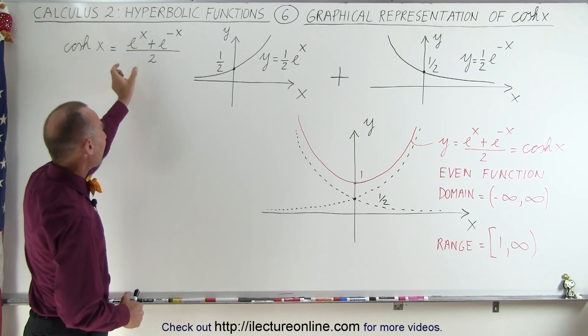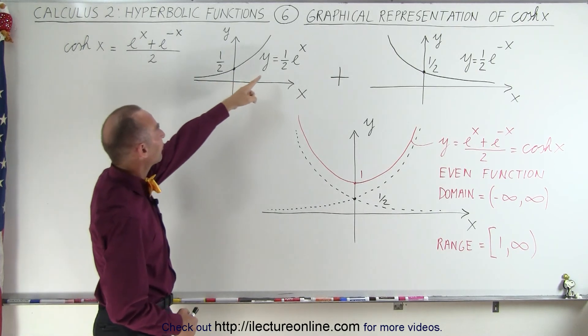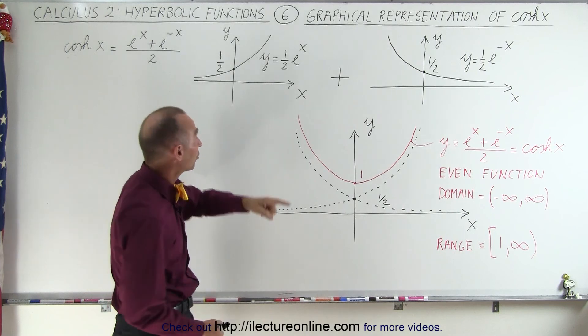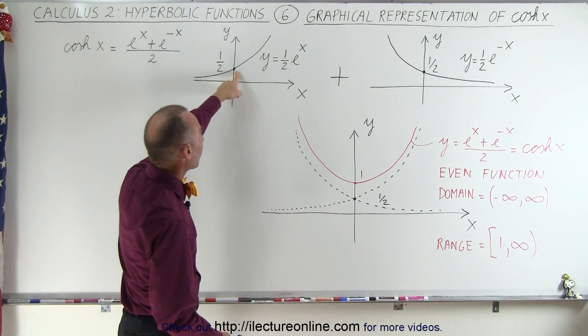If we now graph the first half of that, 1 half e to the x, we get a function that looks like this. It's the exponential function that crosses the y-axis at 1 half.